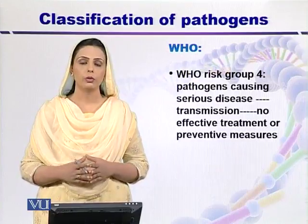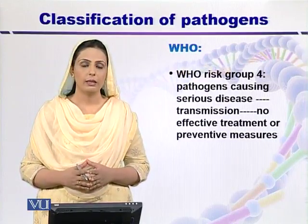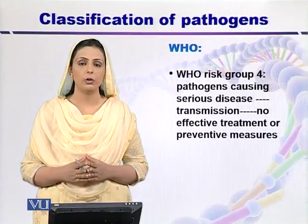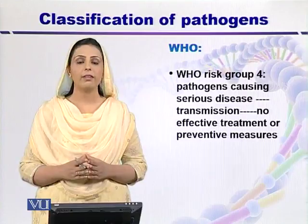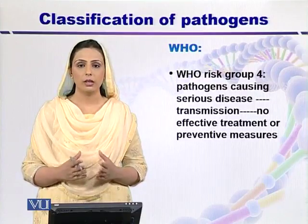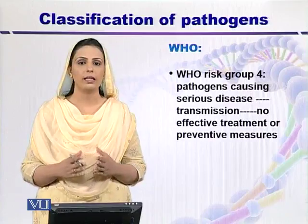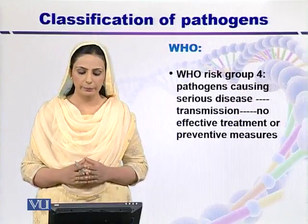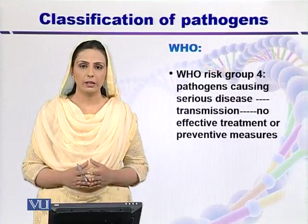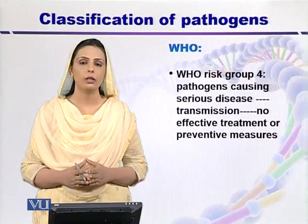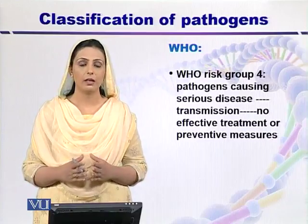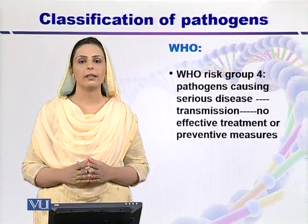WHO risk group 4 includes bioweapons — those pathogens or microorganisms that cause fatal disease in human beings or in animals. These diseases can be transmitted from one individual to another, either contagiously or carried by mosquitoes or any sort of insect. For pathogens in this group, there is no effective treatment for the patient, and there are no preventive measures or vaccines available. Examples include dengue virus and Ebola virus.